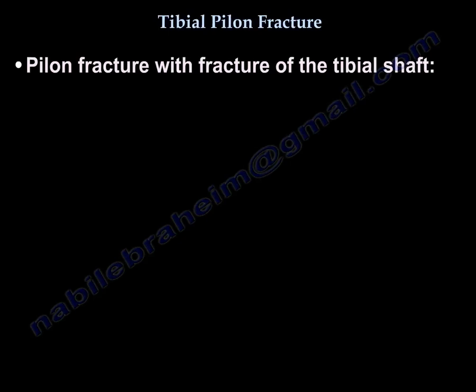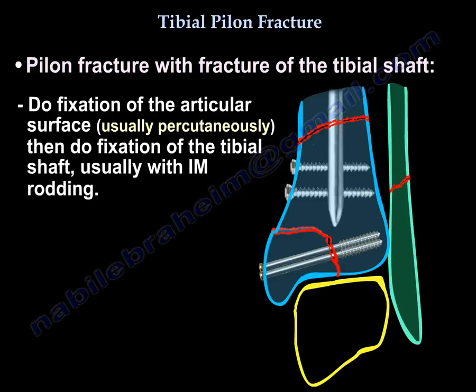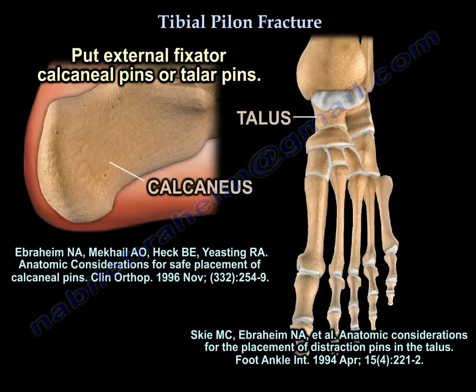If you have a pylon fracture with fracture of the tibial shaft, you do fixation of the articular surface — usually percutaneously — then fixation of the tibial shaft, usually with IM rodding. When you use an external fixture around the ankle, you can put the pins in the calcaneus or in the talus.